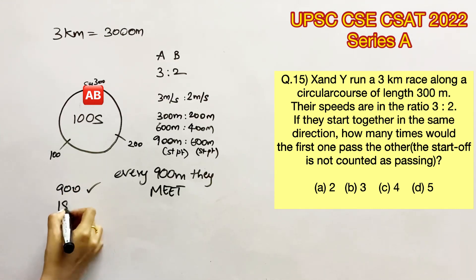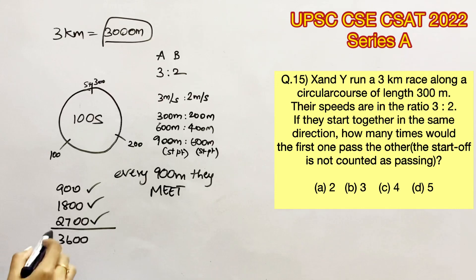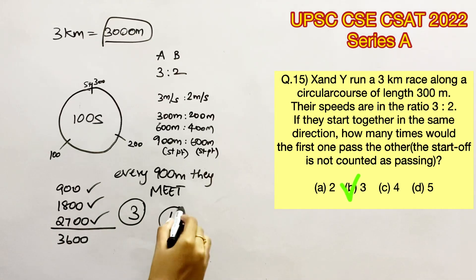And then they'll meet at 2,700 meters, and then 3,600 meters. But we don't need that because the total race is for 3,000 meters. So A and B would have met exactly three times, which means option B is the answer.